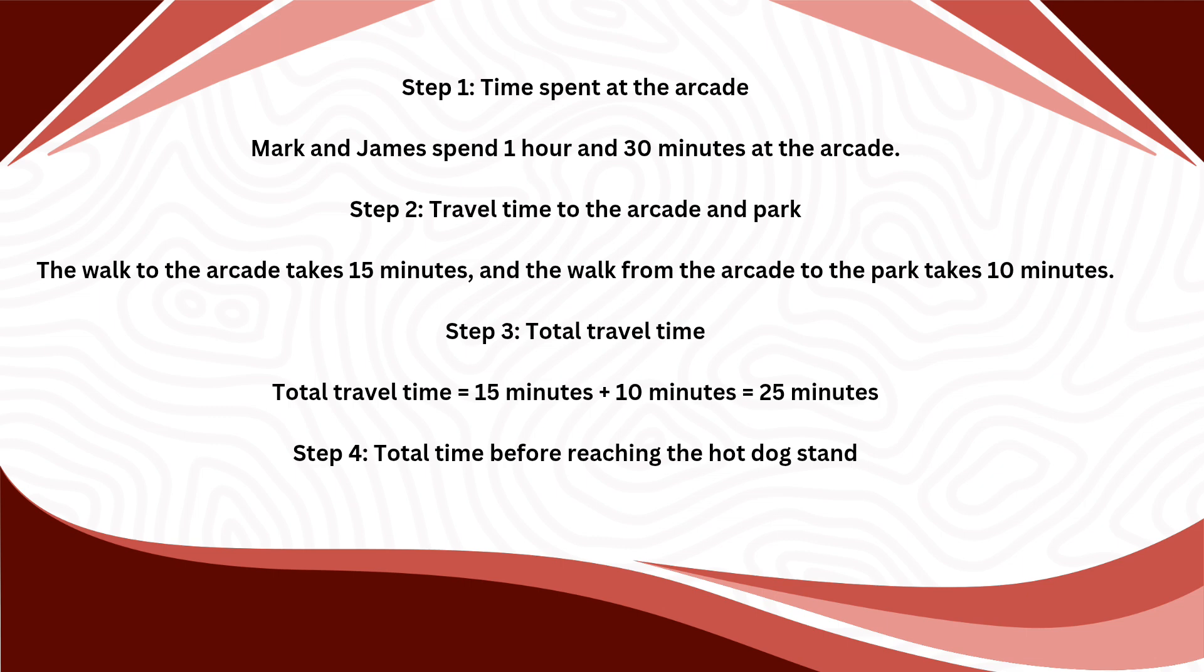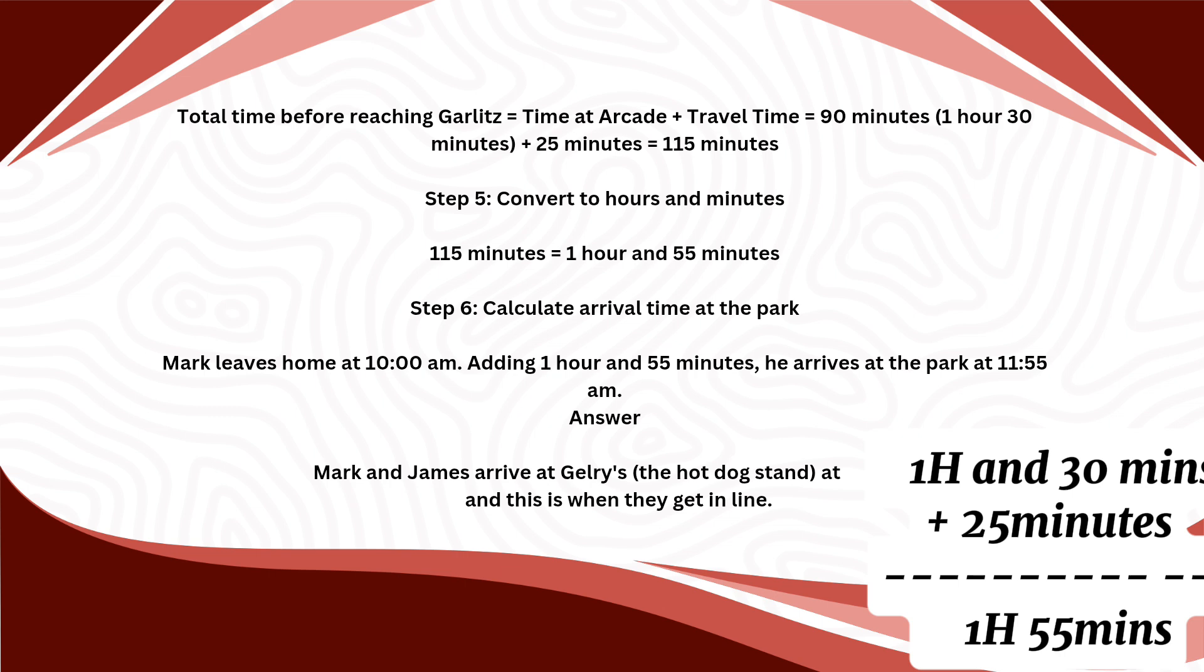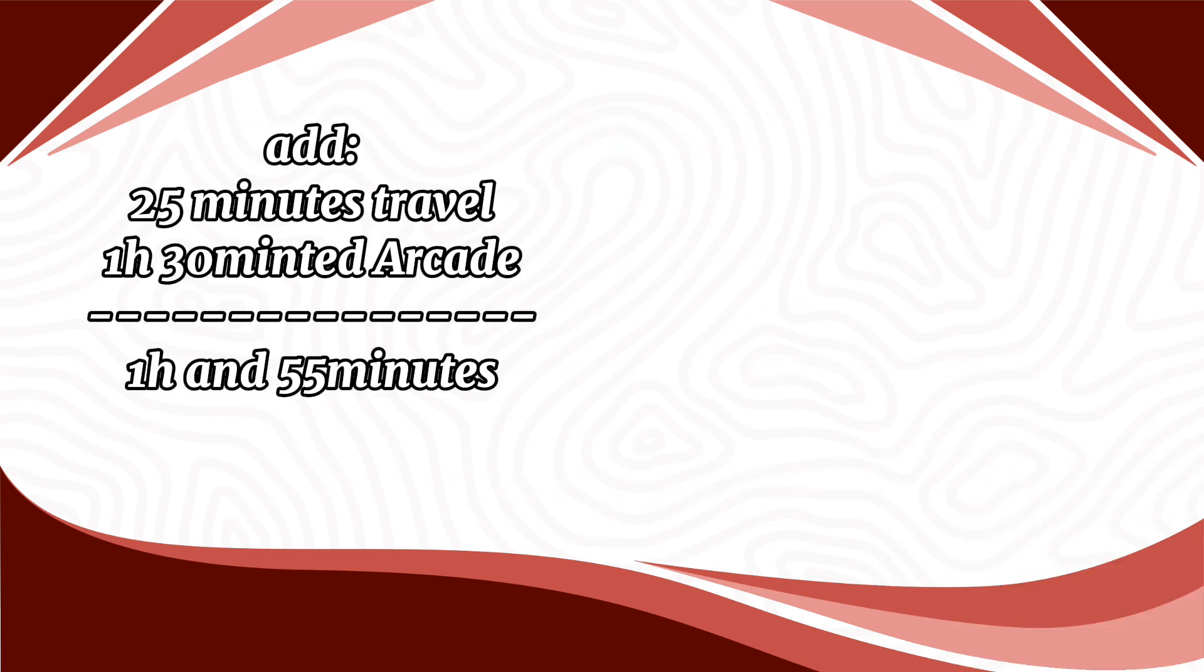First, let's determine the time duration of the travel and the time they spent in the arcade. Let us determine the time spent of Mark and James. In the arcade, they spent 1 hour and 30 minutes. The walk to the arcade takes 15 minutes. The walk from the arcade to the park is 10 minutes. So the total travel will be 15 minutes plus 10 minutes, which will give us 25 minutes. The total time before reaching the hot dog stand is 1 hour and 30 minutes, which they spent at the arcade, plus the total time travel, which is 25 minutes, which will give us 1 hour and 55 minutes.